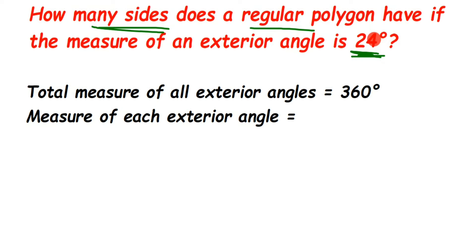Now 24 degrees is the exterior angle we have given. So how many angles are there? All the angles will be of 24 degrees, but how to know how many angles are there? So this 360 degrees I will divide by 24.